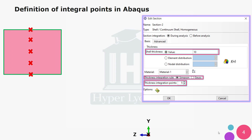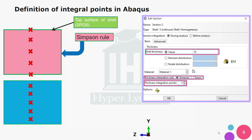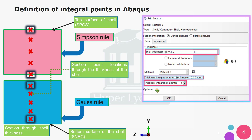Here you can see the placement of section points through thickness based on the Simpson rule, which starts from the top surface of the shell. Here you can see the placement based on the Gauss rule. Here you can see the section points through thickness of the shell at the location of the integration points, and here you can see the bottom surface of the shell.